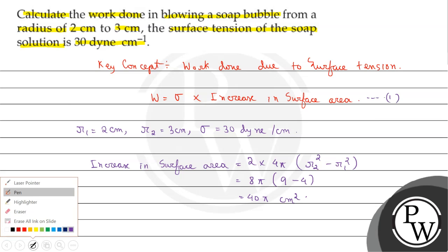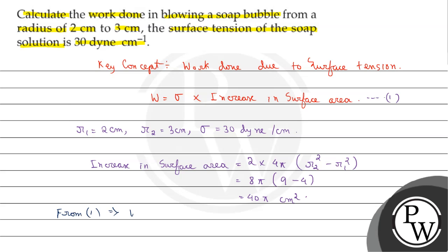From equation 1, we get work done W equals 30 multiplied by the increase in surface area. W equals 30 multiplied by approximately 125.66, which equals 3769.9 erg, since erg is the unit of work done.